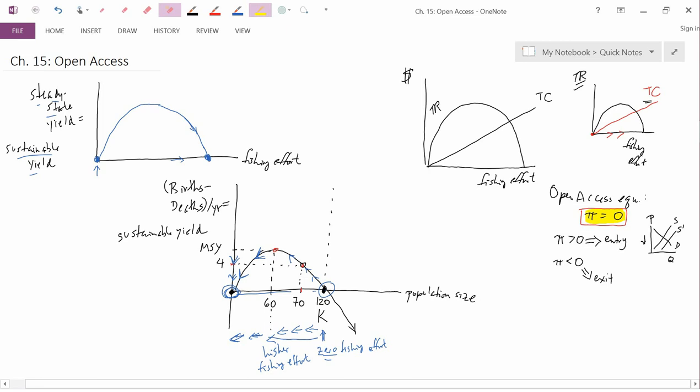We want zero profit. It's easy to see where profit is equal to zero. Profit is equal to zero where total revenue is equal to total cost, which is right here. And so this point, I'm going to label it OA, is the open access equilibrium point, because it has zero profit, because total revenue is equal to total cost.